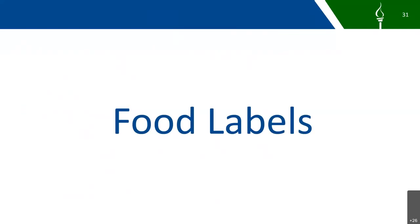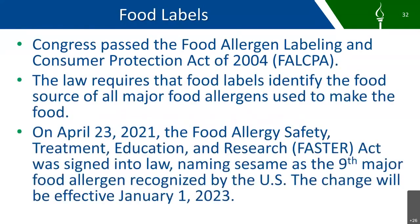Now we're going to switch and talk about food labels. In 2004, Congress passed the Food Allergen Labeling and Consumer Protection Act. This FALCPA law identified eight foods as the major food allergens — the Big Eight: milk, eggs, fish, shellfish, tree nuts, peanuts, soy, and wheat. The law requires that food labels identify the food source of all major food allergens used to make that particular food.